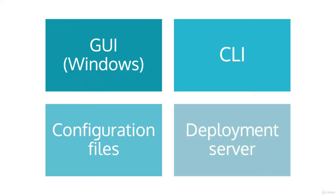There are four options for configuring universal forwarders. Through the GUI, which is done during the installation wizard on Windows. We can do it through the command line interface on Linux and Windows. We can edit the configuration files directly, or we can use a deployment server, which we will go over later in the course.